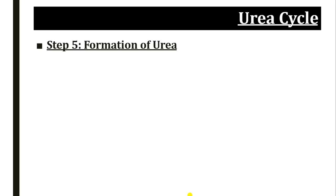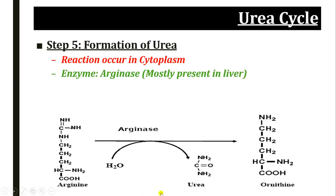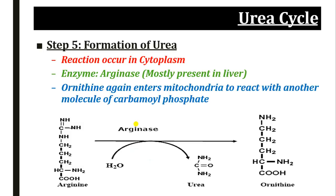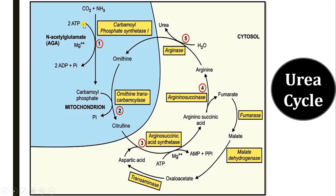The formation of urea is the final stage of the urea cycle and also occurs in the cytoplasm with the help of arginase enzyme, which is mostly present in the liver. Arginase splits arginine into urea and ornithine. That is why this urea cycle occurs only in the liver, and we get urea at the end of this step. The ornithine produced re-enters the mitochondria to react with another molecule of carbamoyl phosphate and the urea cycle continues. So ornithine acts as a catalyst for the urea cycle.